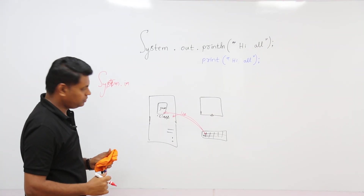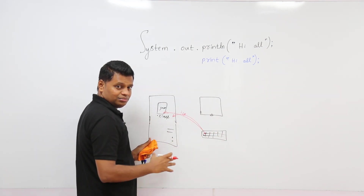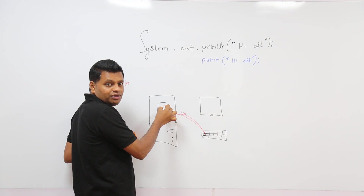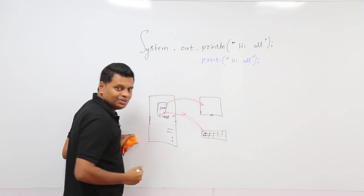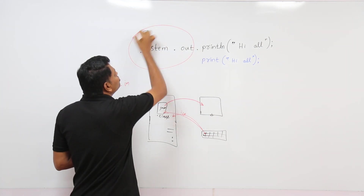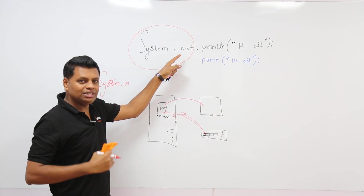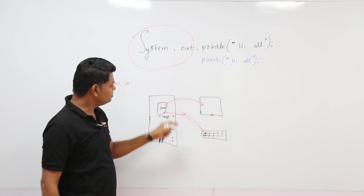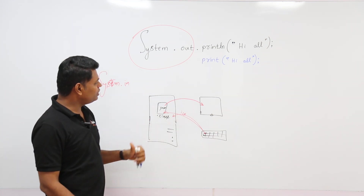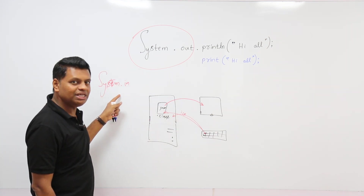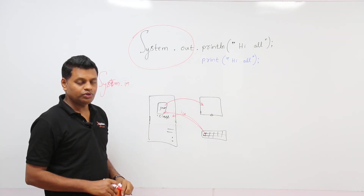We represent keyboard input as system.in. Similarly, when you want to print content, something goes from the Java program out to the monitor, so we represent that as system.out. So system.out is output from the system, and system.in is input to the Java program.